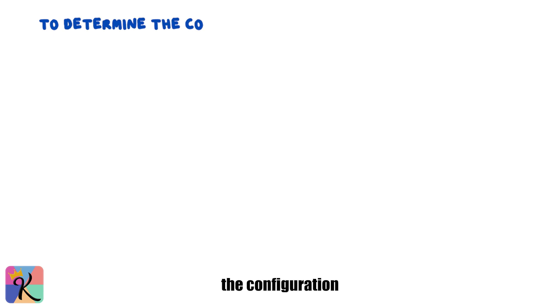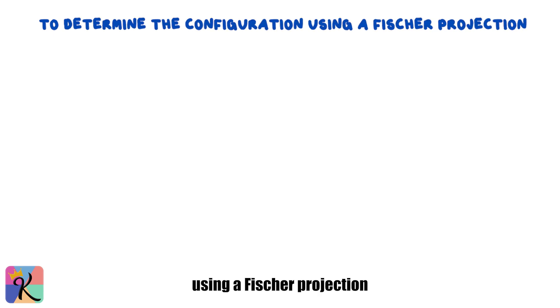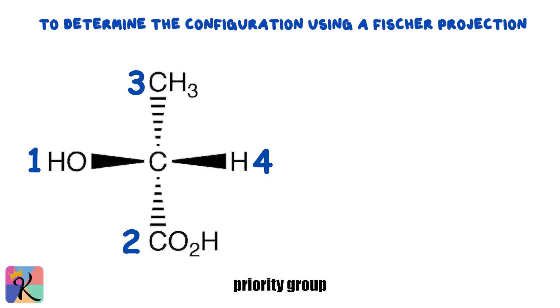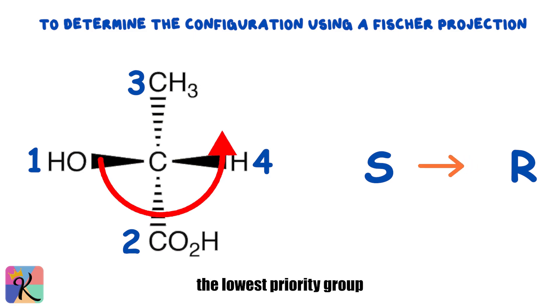To determine the configuration using a Fischer projection: 1. Identify the lowest priority group. If it's on a horizontal line, you'll need to remember that it's pointing out of the page. 2. Follow the same steps to assign R or S, but remember that with Fischer projections, you may need to mentally rotate the molecule, or make switches to properly orient the lowest priority group.